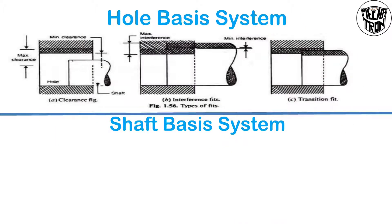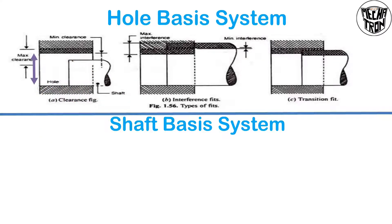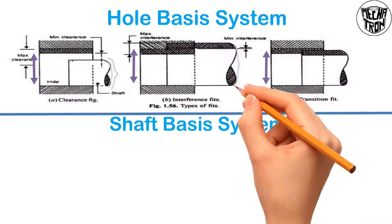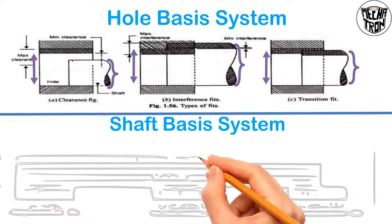In hole-based system, the hole diameter is said to be constant, and the shaft diameter will vary based on the hole diameter. For example, you can see here that the hole diameter is set as constant in all three figures, but the shaft diameter is varied based on our requirement. So if we want to set a hole diameter as constant, then we can choose the hole-based system.